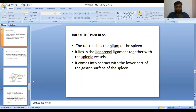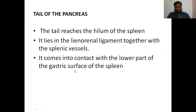We were discussing about the pancreas - the last part of the pancreas, the tail. The pancreas has a head, neck, body, and tail. The features of the head, neck, and body are clear. Now the feature of the tail: it reaches the hilum of the spleen, that's all.